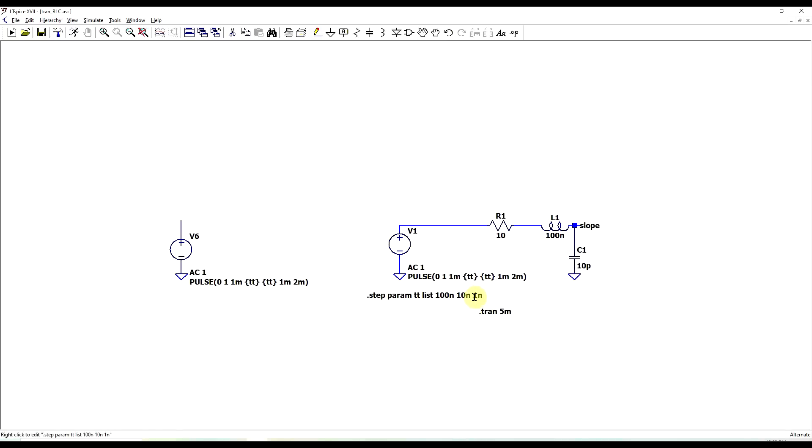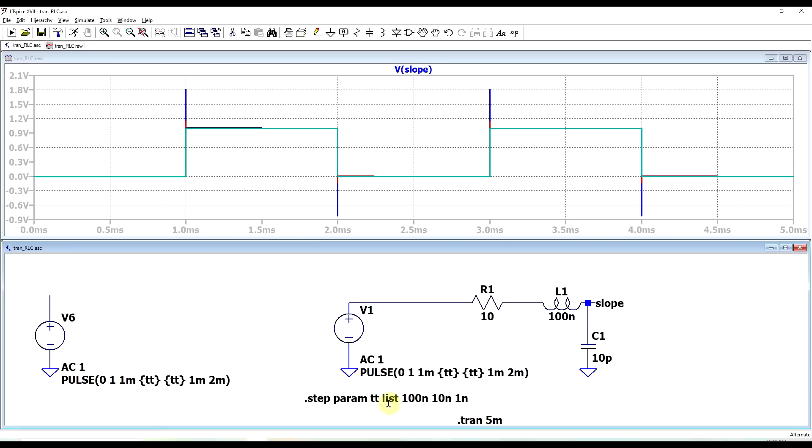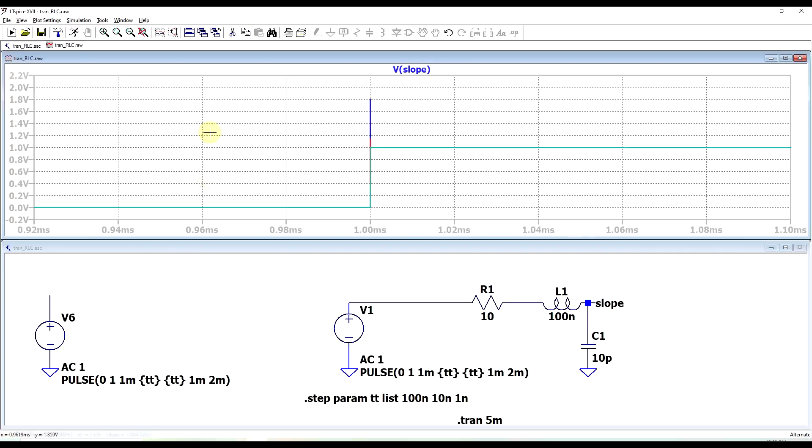So we have three different transition times, 100 nanoseconds, 10 nanoseconds, and 1 nanosecond. And if we run this simulation and look into the waveform present on the capacitor, we can see we are getting different effects.